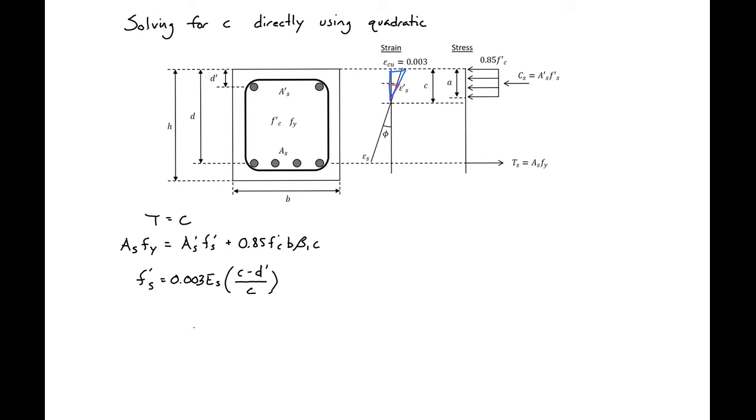We can then plug this expression into our equilibrium expression. So we'll have As Fy equal to As prime times 0.003 Es times C minus D prime over C plus 0.85 F prime C B times beta 1 C.